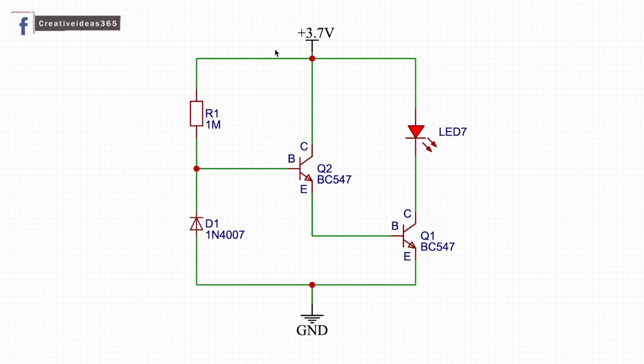The direct path is from this 3.7 volt to this 1 meg resistor to this transistor's base. Because this is not connected yet, this is like open circuit—this will not allow any current to flow directly to the ground if you have not changed anything from the diode. So it will activate this transistor, and this transistor will activate this transistor.